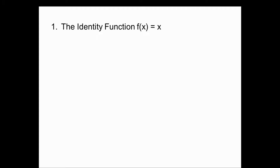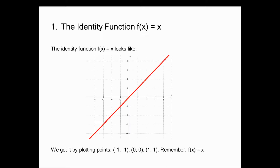The first basic function: the identity function, f(x) = x. You can notice it's a line with slope one and y-intercept zero. It's called the identity function because no matter what you give it, it gives it back to you. It's a line that goes through a 45-degree angle, bisecting the first and third quadrants. I plotted the points (−1, −1), (0, 0), and (1, 1). Whatever you give the function, the function gives it back to you.